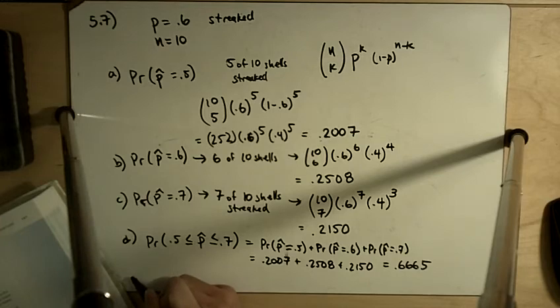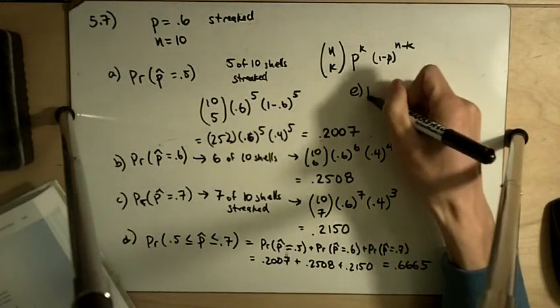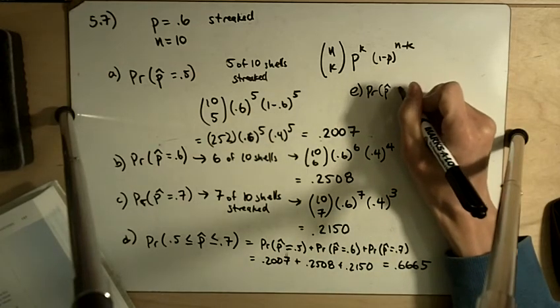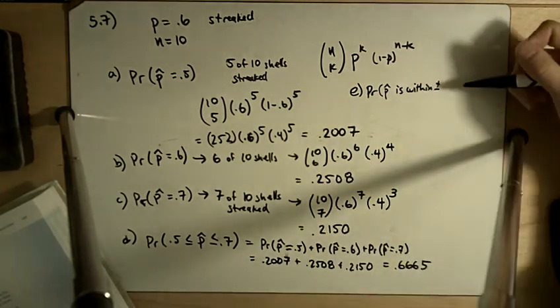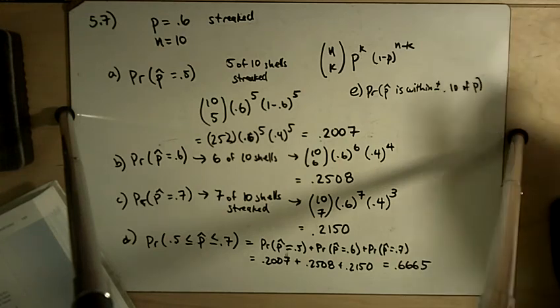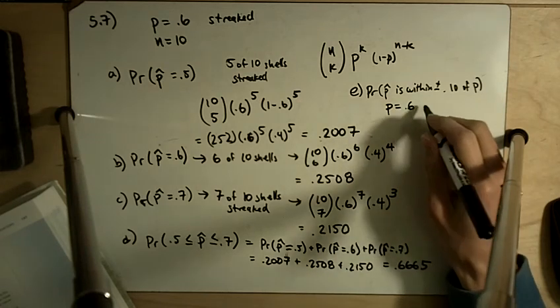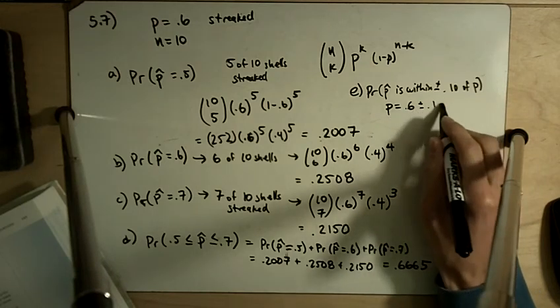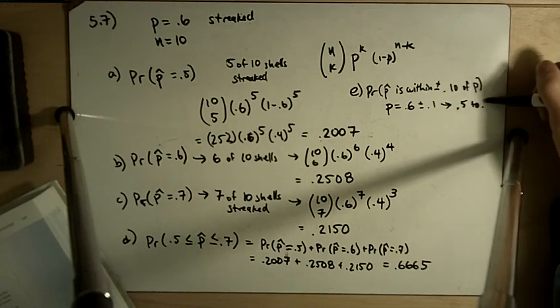And then part E asks, what is the probability that P hat is within plus or minus 0.1 of P? And so P is equal to 0.6. So plus or minus 0.1 of 0.6 gives us from 0.5 to 0.7.